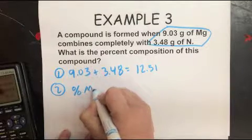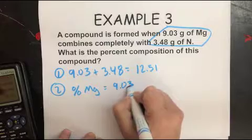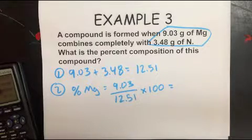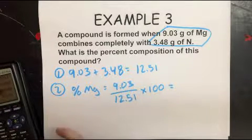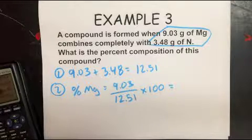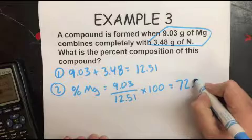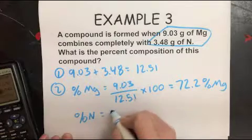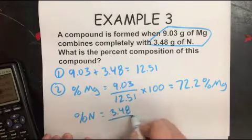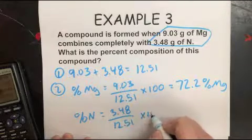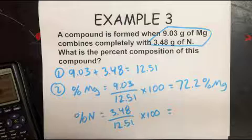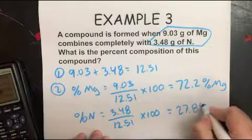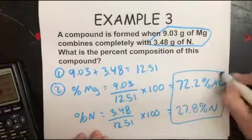You're just taking the masses that are given to you. So you're going to do the percent of Mg by simply doing 9.03 divided by 12.51 times 100, which gives you 72.2% Mg. Nitrogen, 3.48 divided by 12.51 times 100 equals 27.8% nitrogen. And there's your two answers.